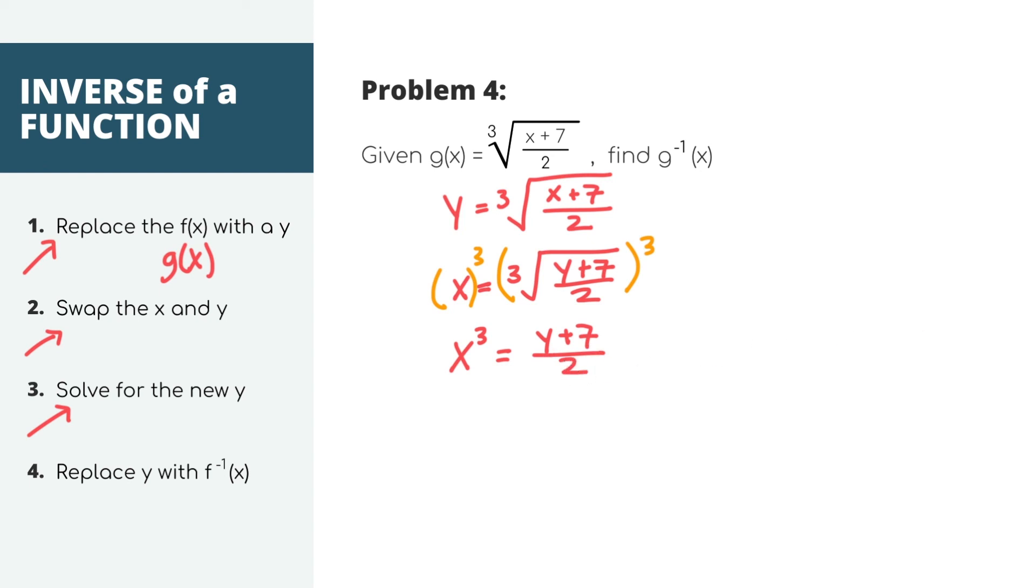Now to isolate y, notice that the whole expression on the right side is being divided by 2. So let's do the opposite and multiply by 2 on both sides. Finally, to get rid of the plus 7, we can minus 7 from both sides. And we'll end up with 2x cubed minus 7 equals y. For the final step, let's replace y with the inverse of g of x. Now don't forget that the original function was called g of x, not f of x. You might lose easy points here. And this is our final answer.